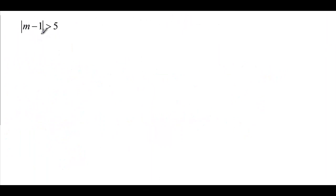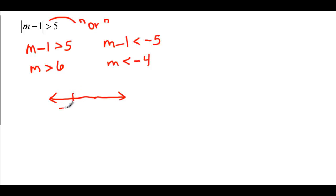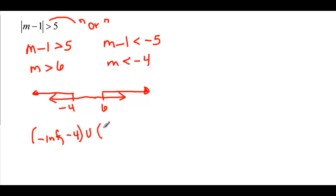Now this one is already isolated, so we just take the two cases. m minus 1 is greater than 5, and m minus 1 is less than negative 5 — flip the sign. Adding 1 to both sides, m is greater than 6. Adding 1 on the other side, m is less than negative 4. On a number line, negative 4 goes left to negative infinity and 6 goes right to infinity — there's a gap in the middle. So we have an or: negative infinity to negative 4, union, 6 to infinity.